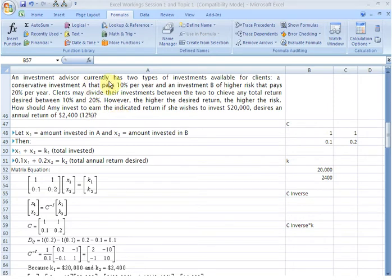The investment advisor in this problem has two types of investments available for clients, a conservative investment A that pays 10% per year and an investment B of higher risk that pays 20% per year.